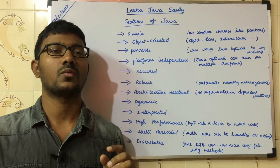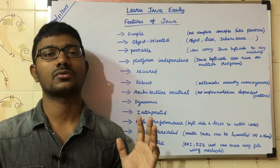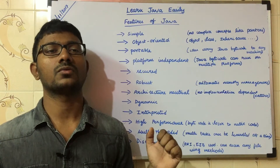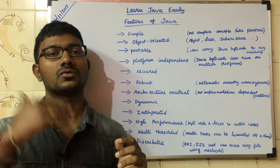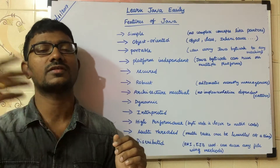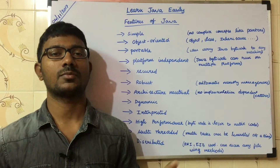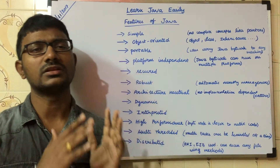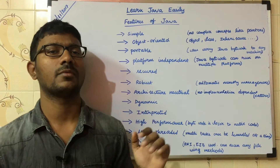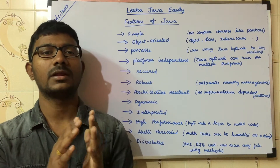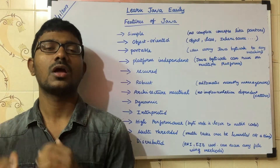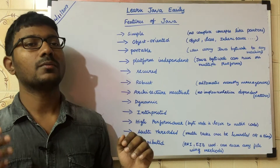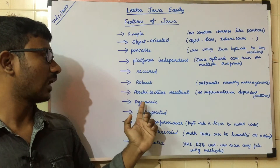Next, Java is Portable. Once you compile the Java source code, you get Java Byte Code. This byte code is easy to transfer. If you run the byte code on another platform, you get the same output.